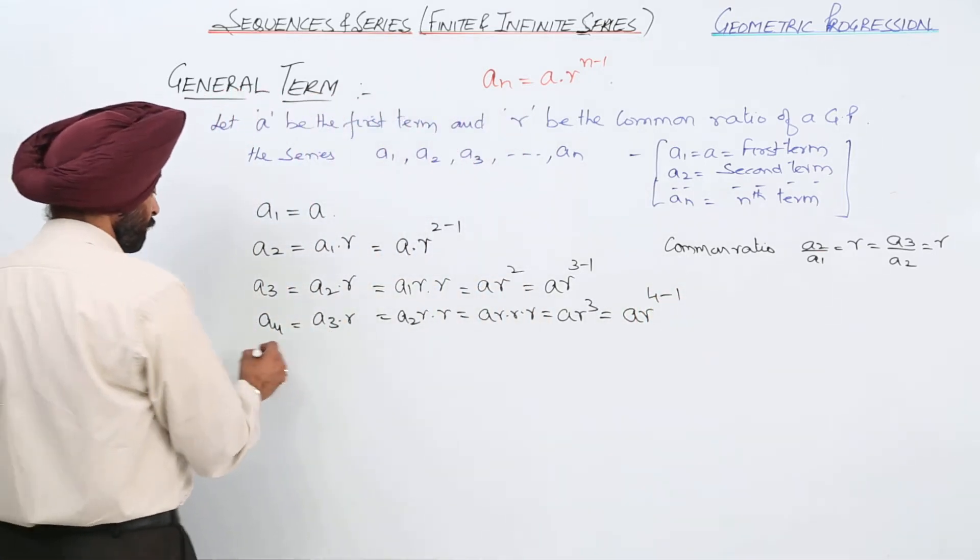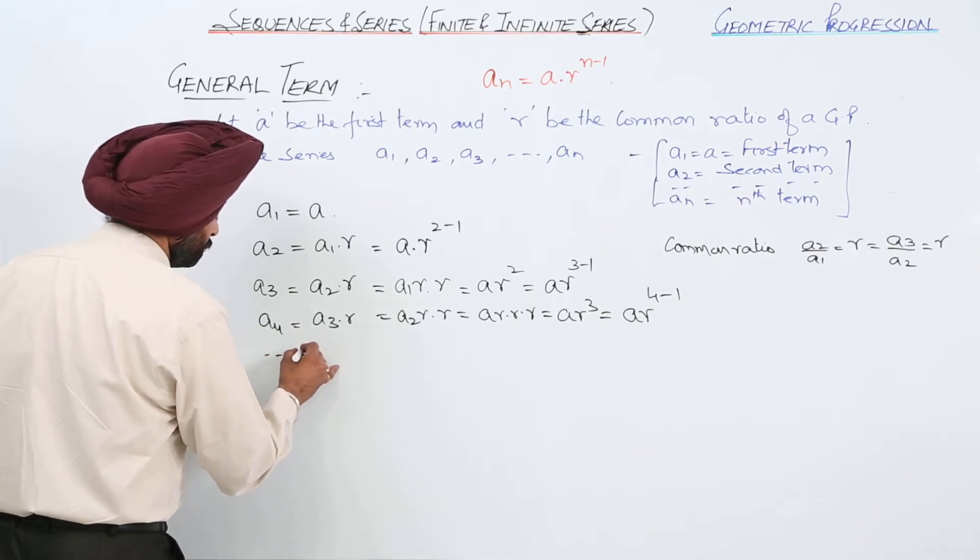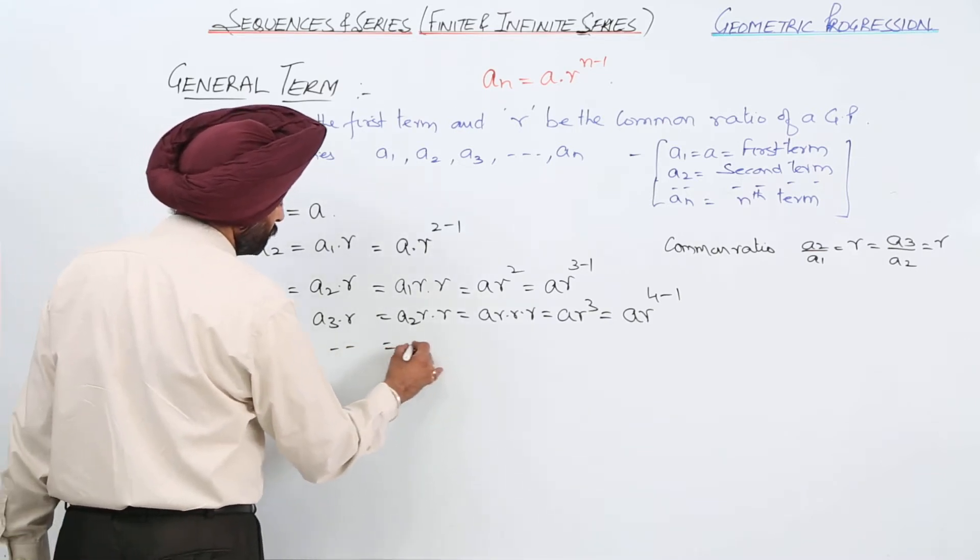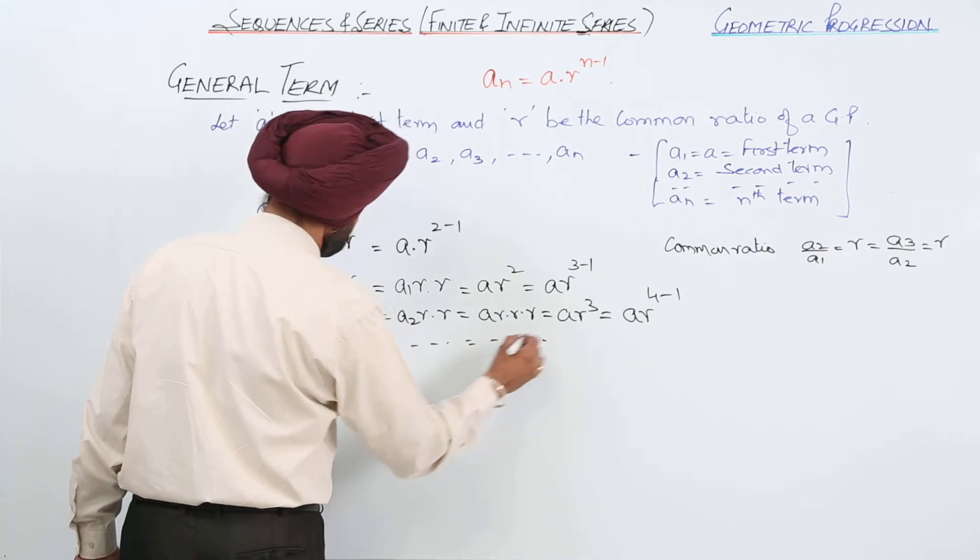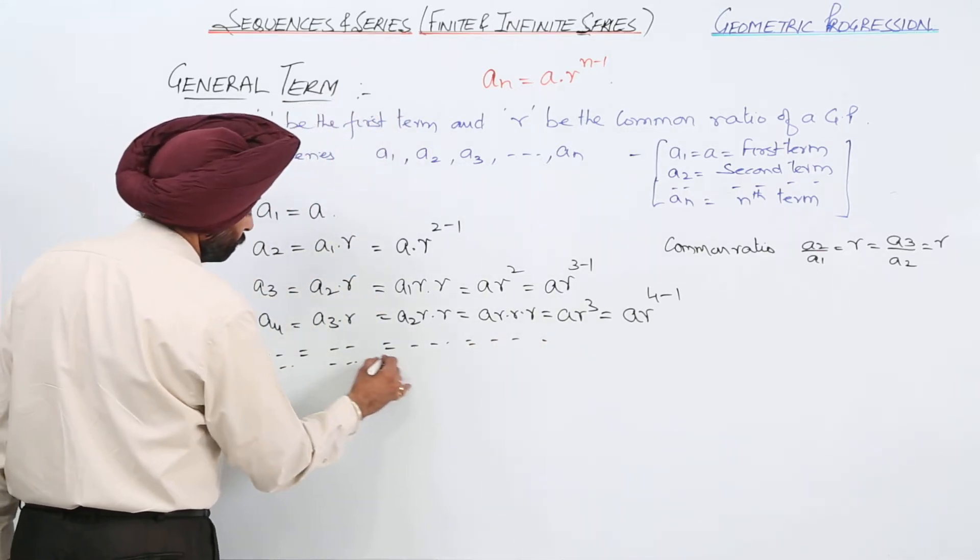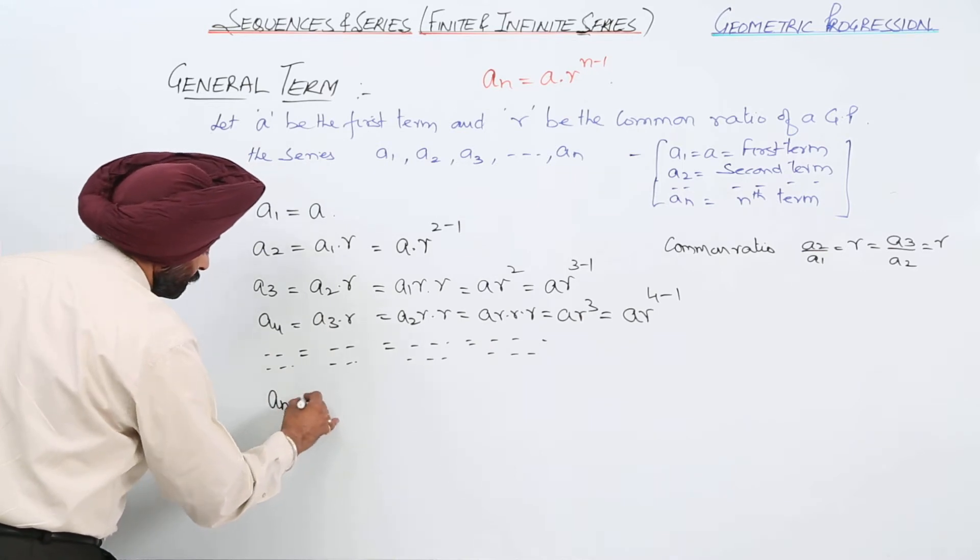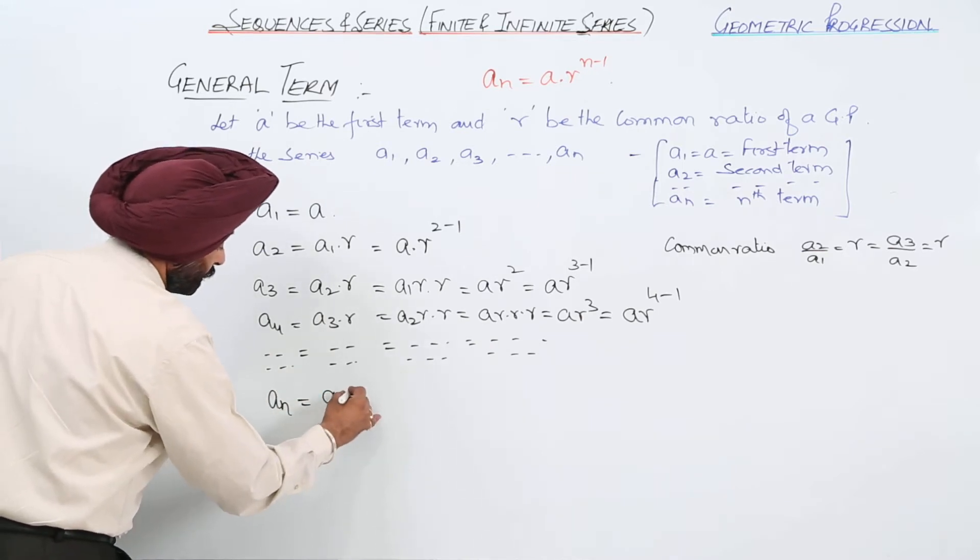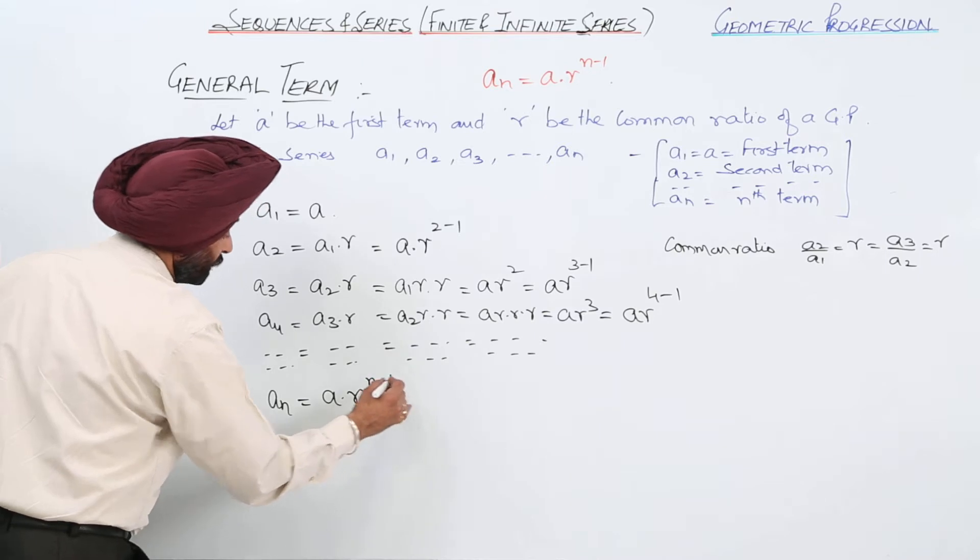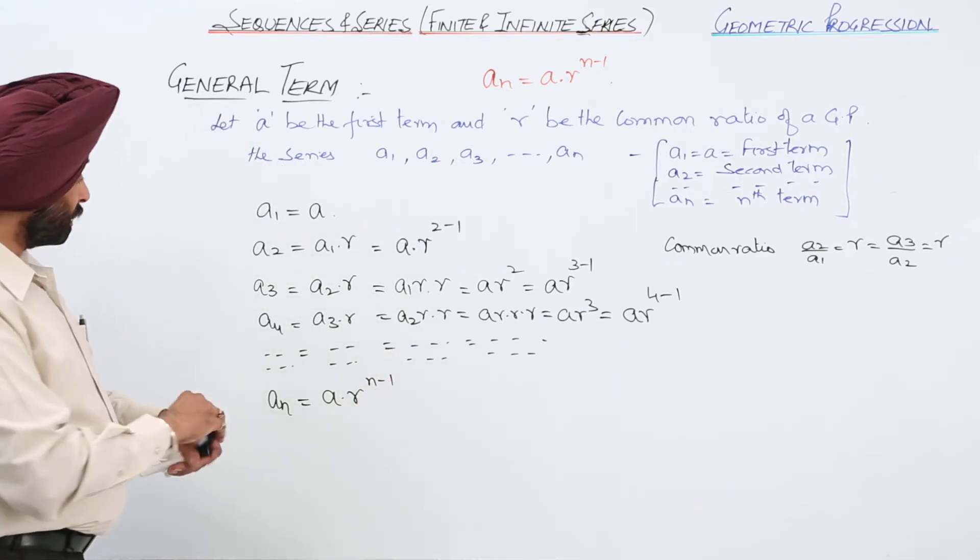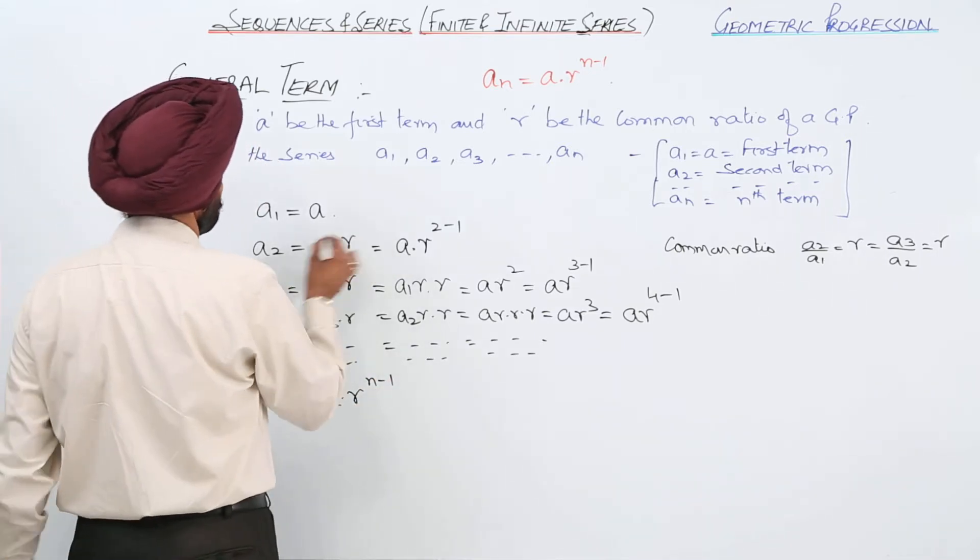Like this, we can go for all the other cases. Like this one, now what is An then? An will be a times r raised to power n minus 1. Now how n minus 1?